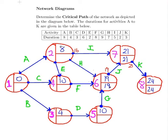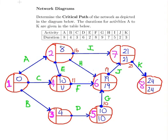For node five, G takes nine time units, so the latest finish is ten — and that's the only one to consider. For node four, F takes eight time units, so nineteen minus eight gives eleven — that's the only route to consider. For node three, D takes six time units from node five, so ten minus six gives four.